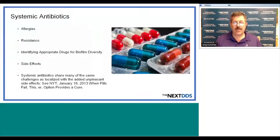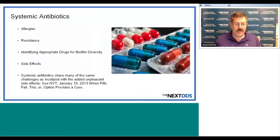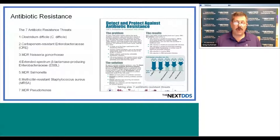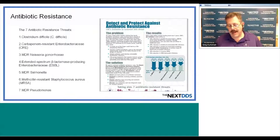We also have problems with systemic antibiotics: allergies, resistance, difficulty identifying appropriate drugs for biofilm diversity, and side effects. Systemic antibiotics share many of the same challenges as localized delivery, with added unpleasant side effects. Regarding antibiotic resistance, we have seven antibiotic-resistant threats including Clostridium difficile and others. Sometimes when we knock one bacteria down, these resistant organisms spring up and cause problems. A patient came in today with an infection where every time she takes an antibiotic, she gets another problem — we had to put her on additional medicine to counteract the antibiotic effects. Antibiotics are not always the answer, and they do have problems in themselves.